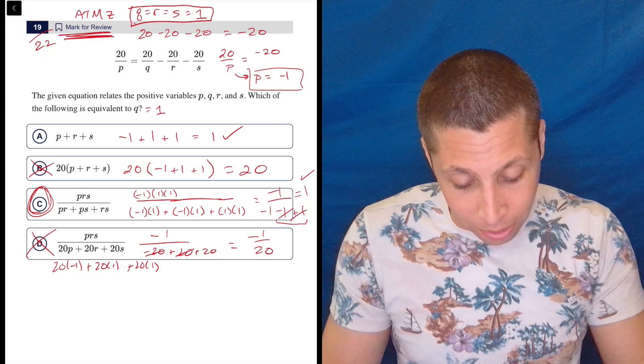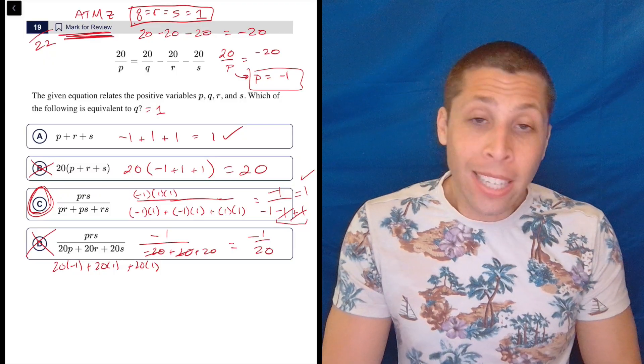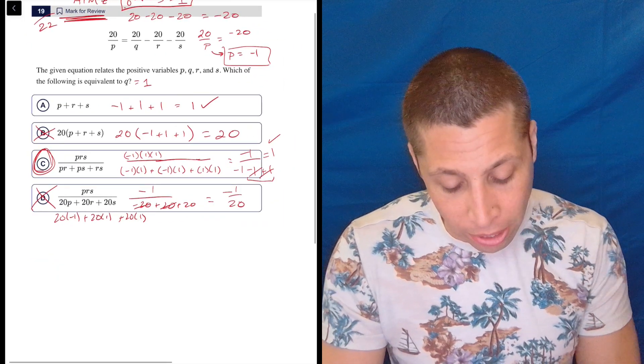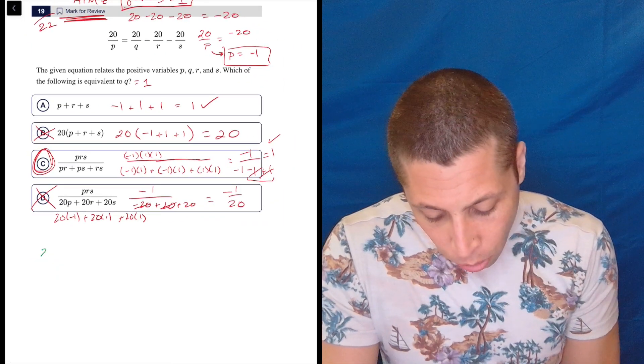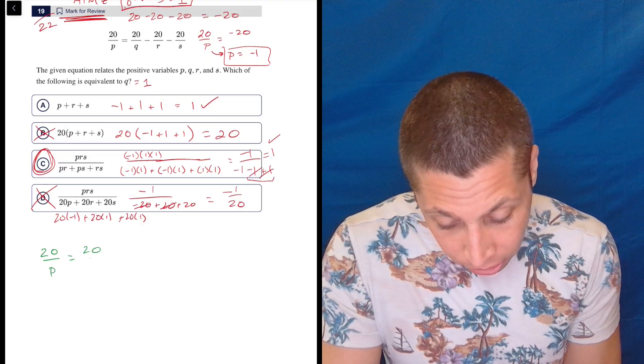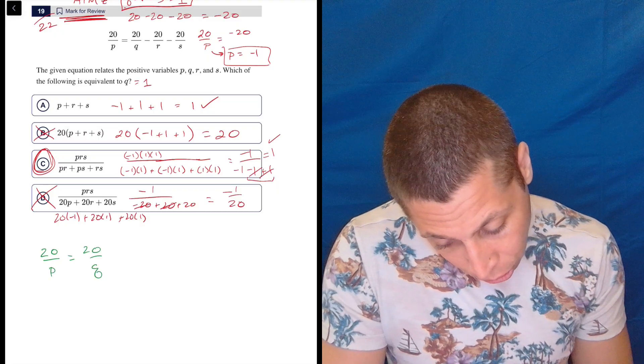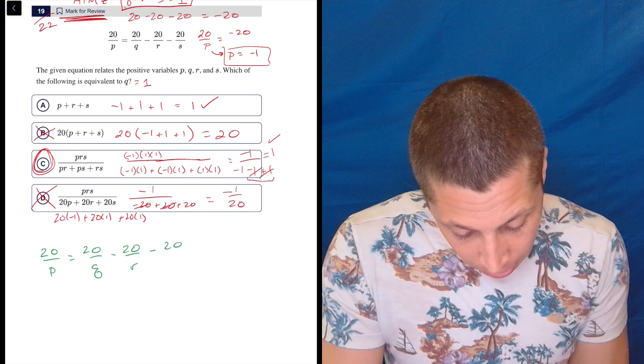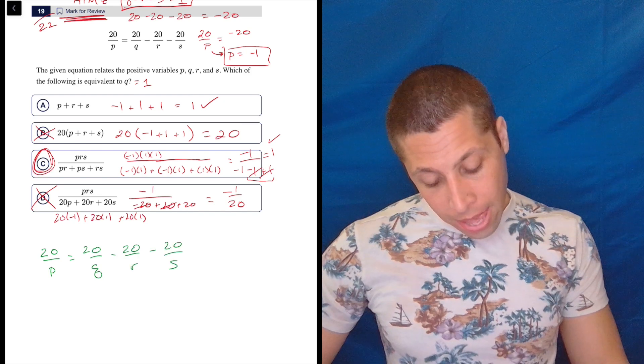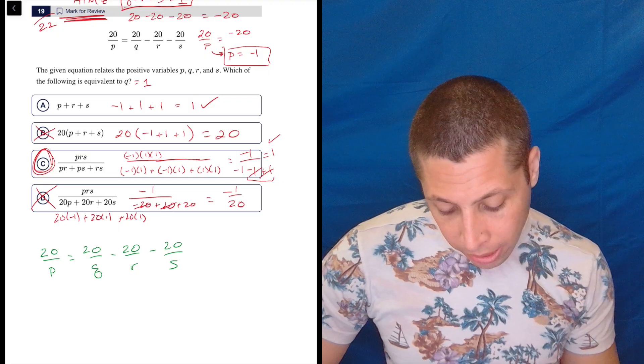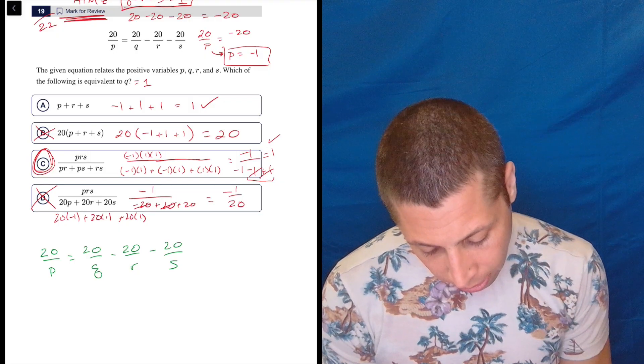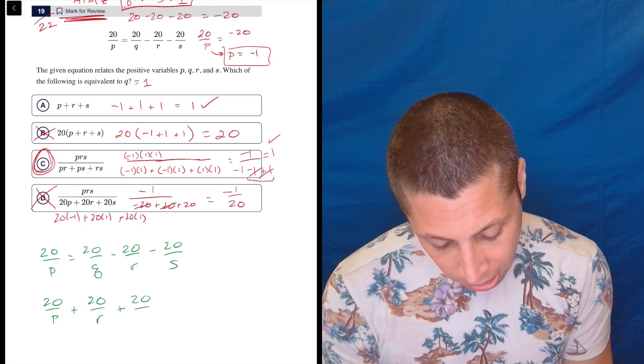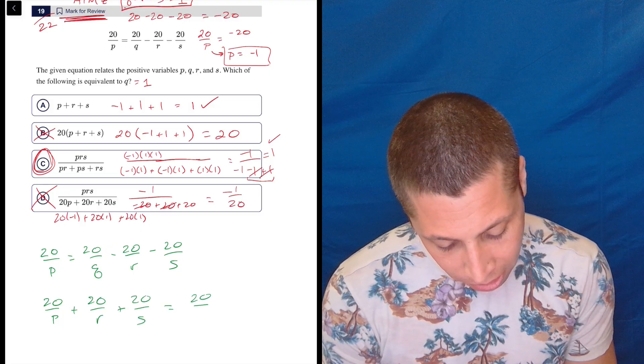So let's try a couple different ways to do it. So let's see if we can, first of all, just do the algebra. Okay, that's maybe the first thing. So in order to do this algebra, we would, I guess, have to get common denominators because we're trying to get what? We're trying to get Q by itself. So there's a couple ways to do that. But I think maybe we start by moving the R and the S over. So we would get 20 over P plus 20 over R plus 20 over S is equal to 20 over Q.